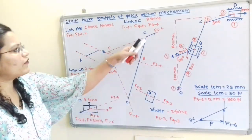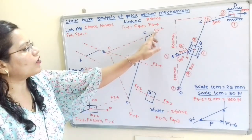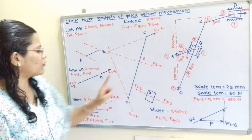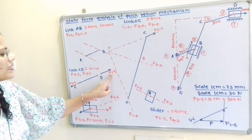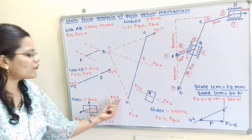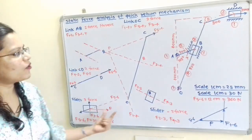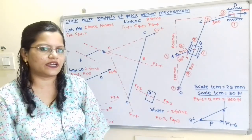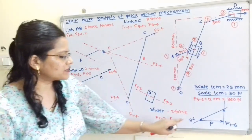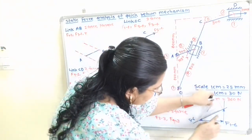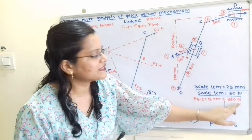Link OC is a three-force member, so we draw its force polygon. The magnitude of F of 5 to 4 equals F of 4 to 5, which equals F of 6 to 5, which equals F of 5 to 6. We first find F of 5 to 6 from the force polygon. For the 300 N force, the length of F is taken as 10 cm, giving a scale of 1 cm equals 30 N. Measuring F of 5 to 6 gives 12 cm, so 12 × 30 = 360 N.